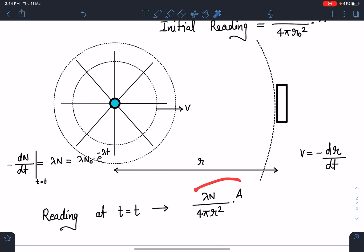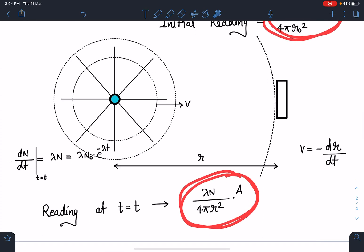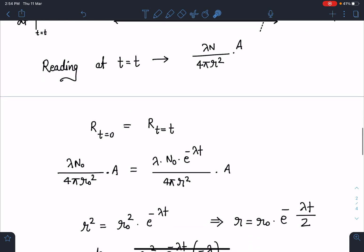Since this number and this number remain same that means initial reading and final reading or reading at any time T remain same. We will equate these two reading at t equal to 0 and reading at t equal to T. I am going to get R as a function of time T from here which comes as R square is equal to R naught square into e to the power minus lambda T or I can say R is equal to R naught e to the power minus lambda T by 2.